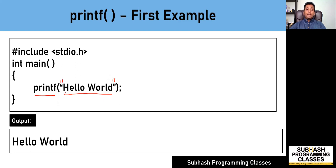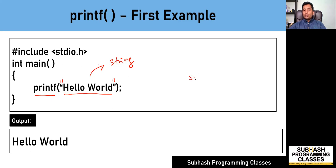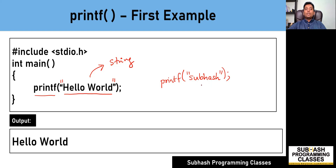In C language, any group of characters written in between a pair of double quotes is considered as a string. So if you want to print certain characters on the screen, it is mandatory that you group those characters in the form of a string and pass it as a parameter to the printf function. For example, if you want to print 'Subhash' on the screen, those characters must be written in double quotes and passed to printf, which will then print Subhash on the screen as output.